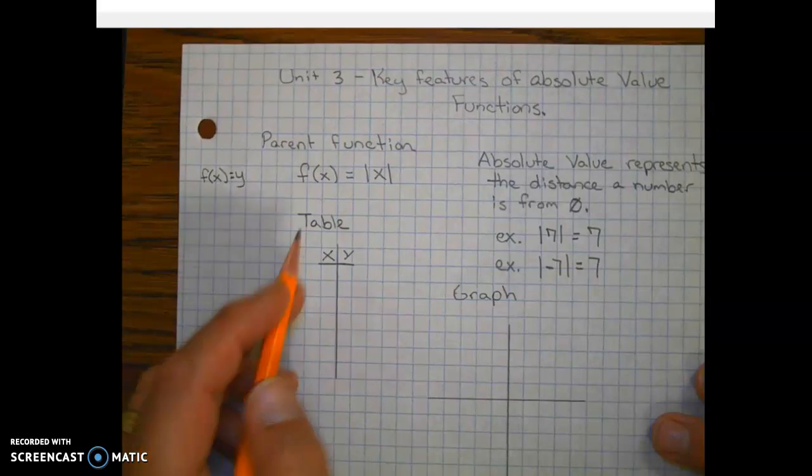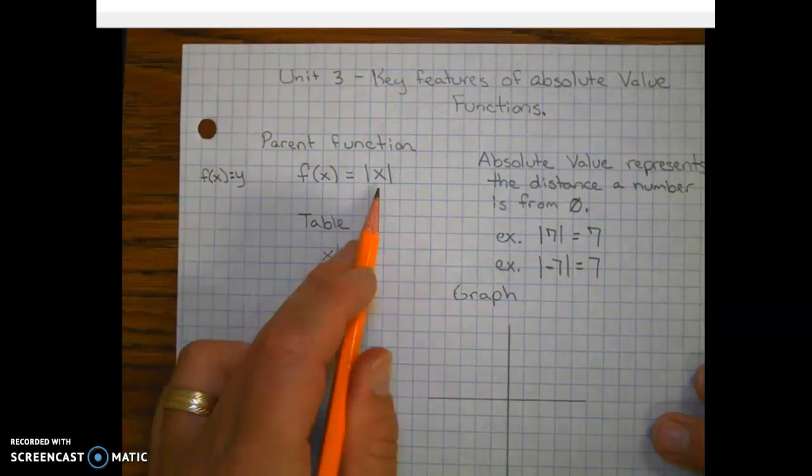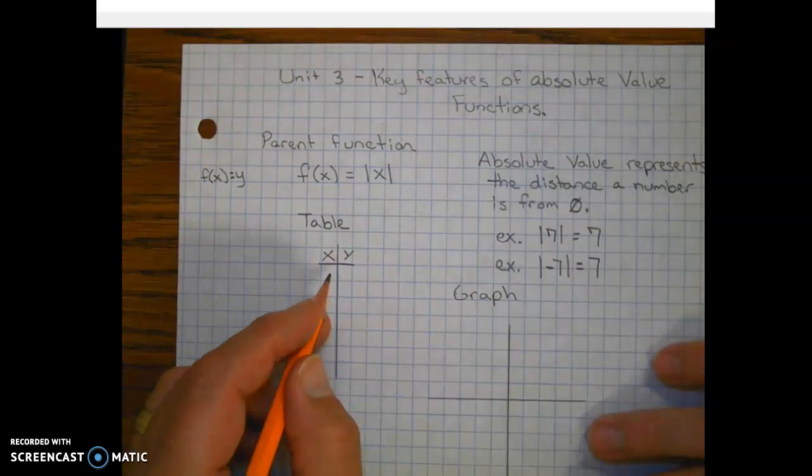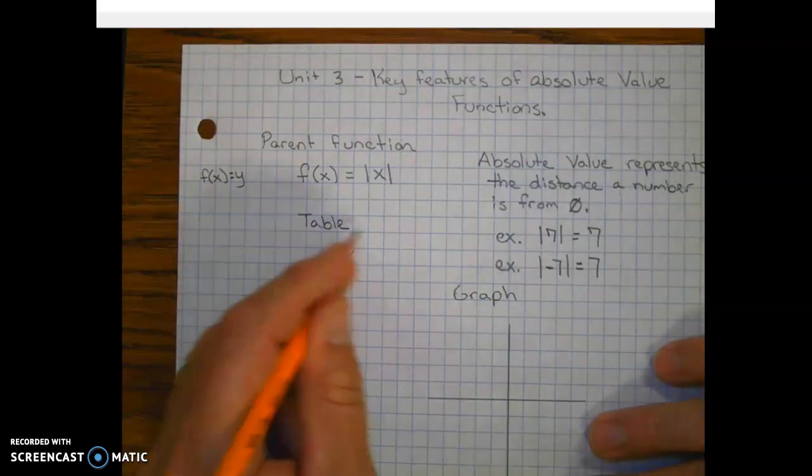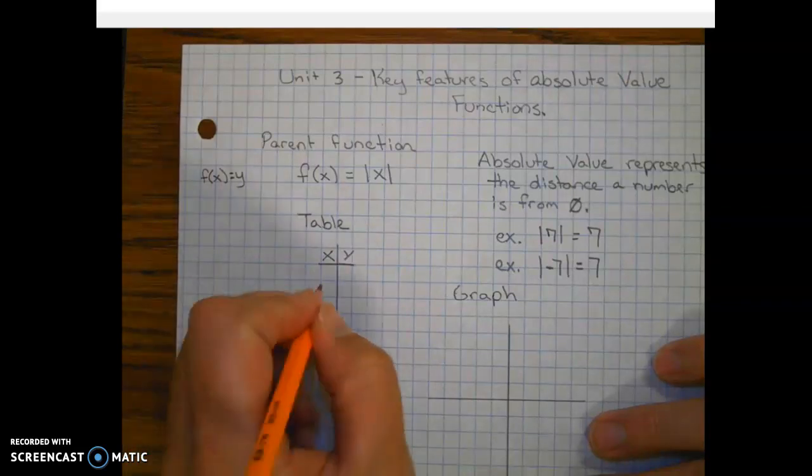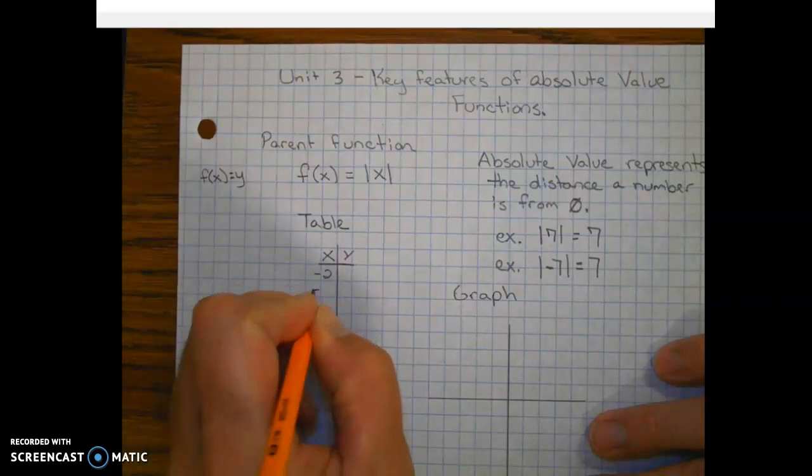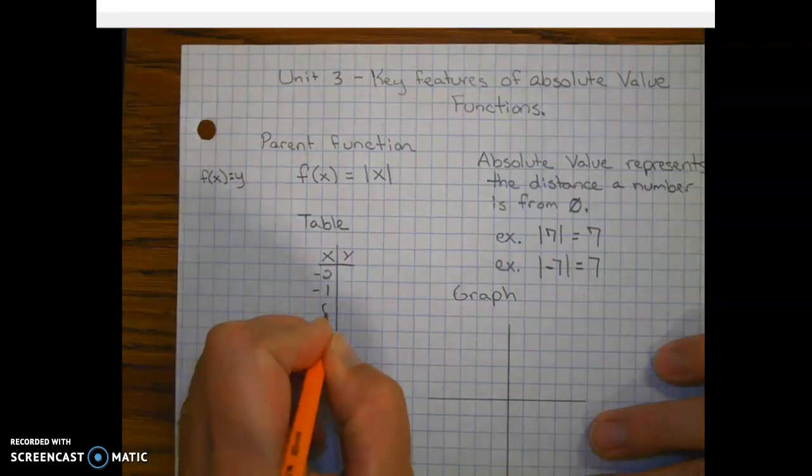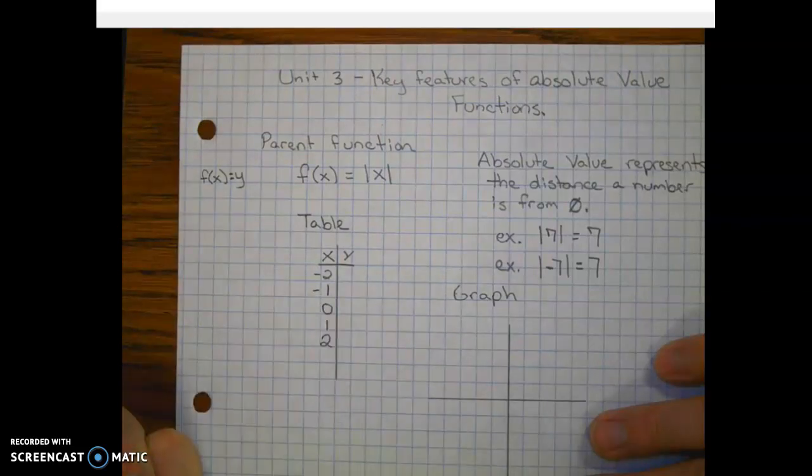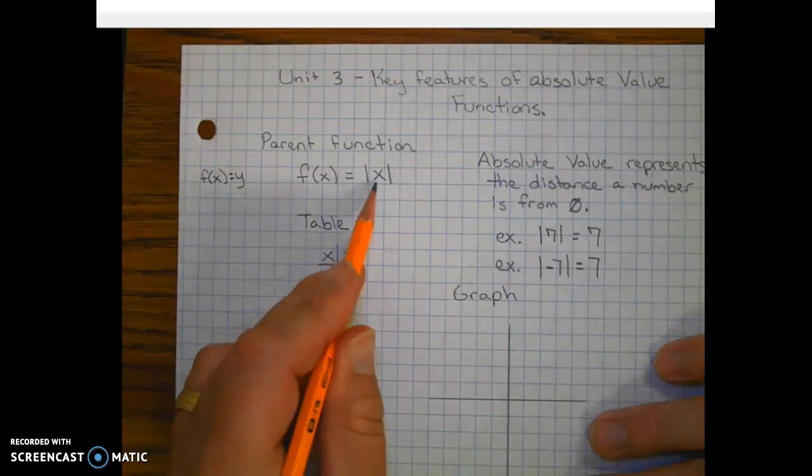So let's go ahead and find out what the parent table is for this function. It's very important. So we're going to pick some numbers. And so anytime you are graphing a function, you want to pick some negative numbers, zero of course, and positive numbers.